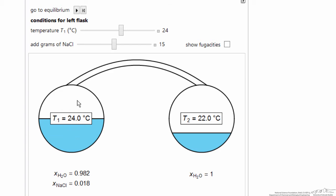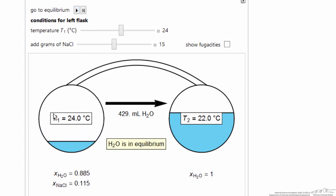So here is the simulation, and we start out where we have mole fraction of sodium chloride 0.018, which corresponds to adding 15 grams to the flask on the left. We hit the play button, and it goes to equilibrium by water moving from the left to the right.